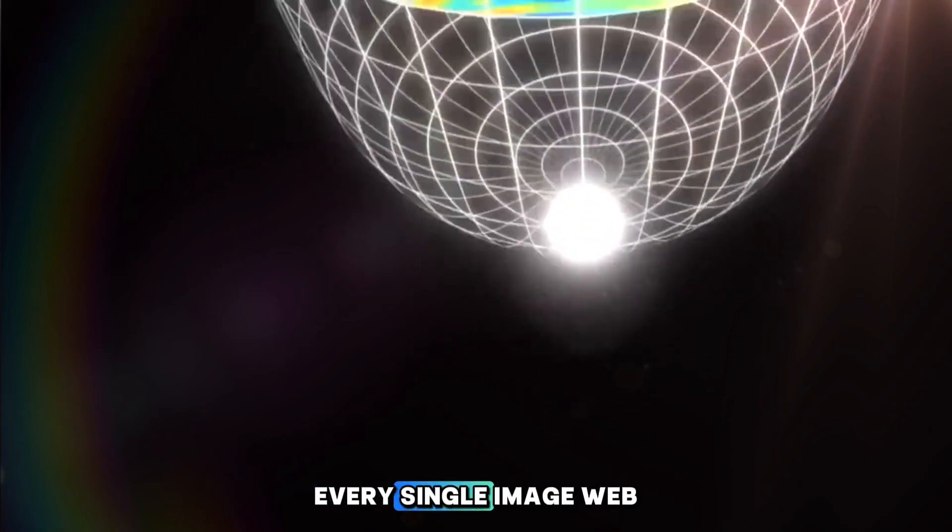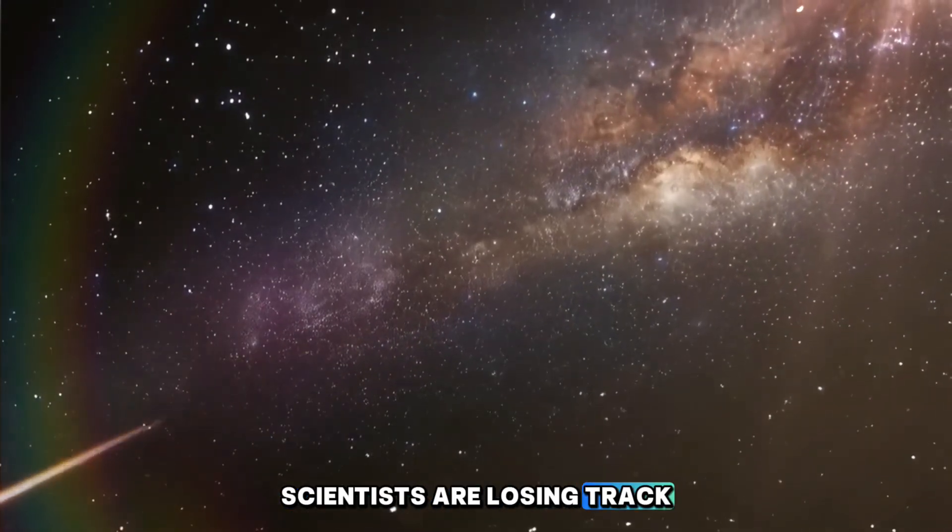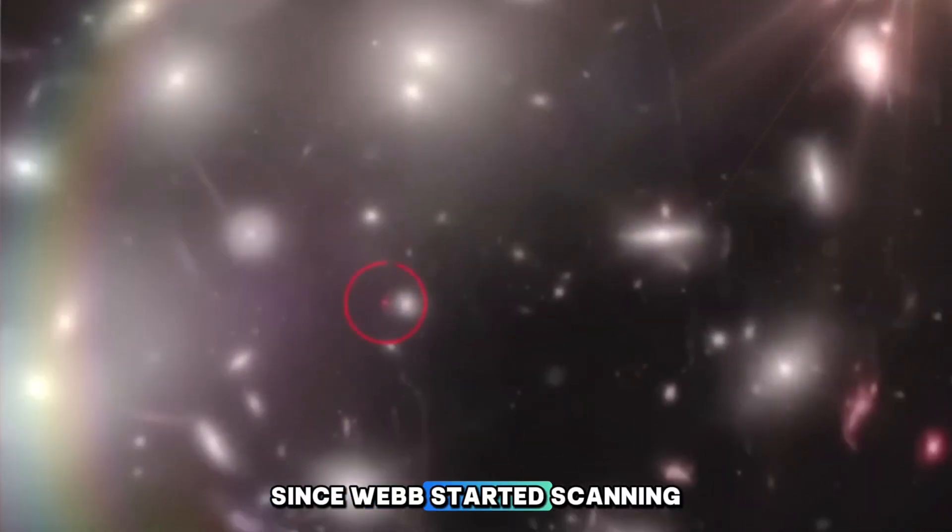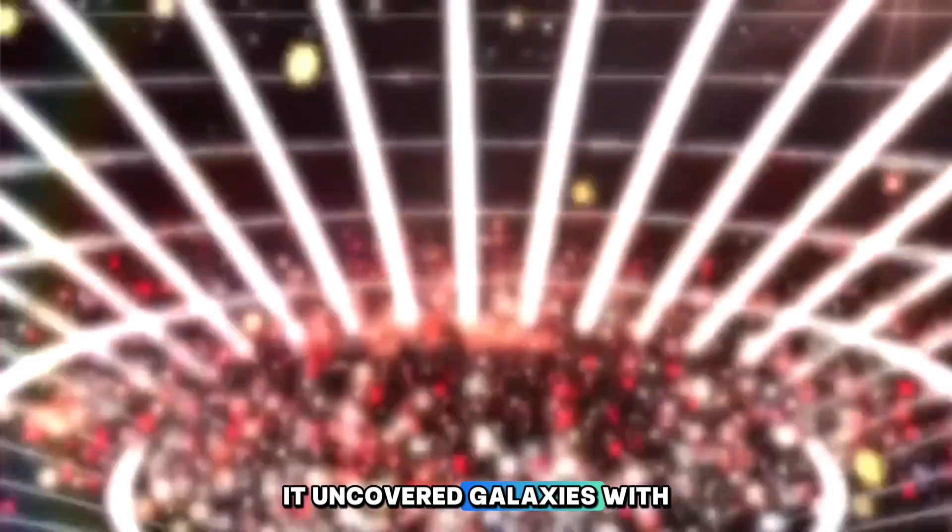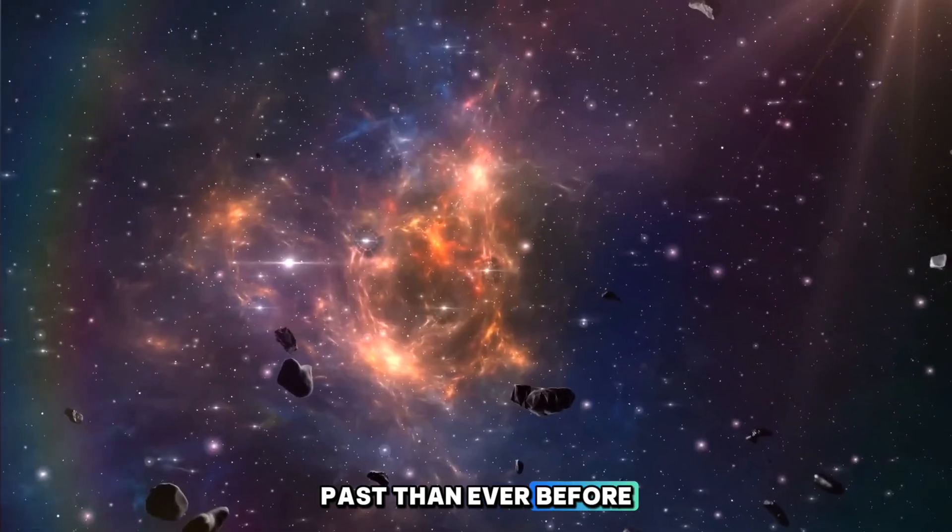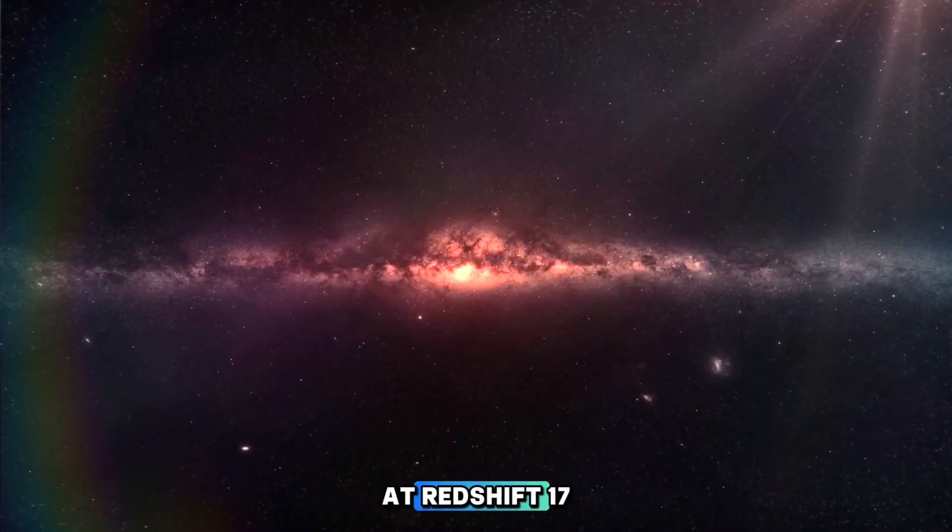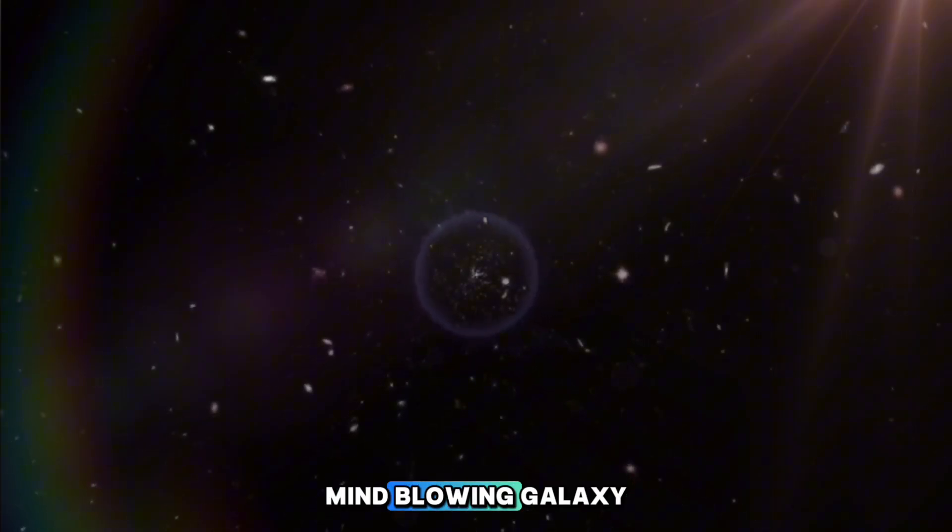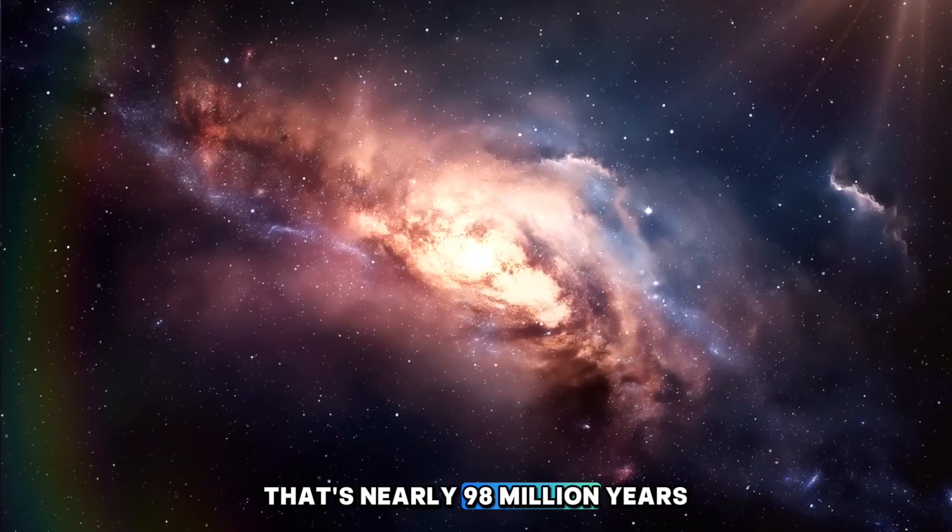Every new data set, every single image Webb beams back, keeps smashing the old records to dust. Scientists are losing track of how many most distant galaxy ever titles have been broken since Webb started scanning the sky. Recent Webb data took things to a whole new level. It uncovered galaxies with redshifts between 17 and 20, reaching deeper into the past than ever before. And if that wasn't shocking enough, Webb spotted six galaxies at redshift 17, three between 24 and 25, and one absolutely mind-blowing galaxy at a record-shattering redshift of 32. That's nearly 98 million years after the Big Bang.